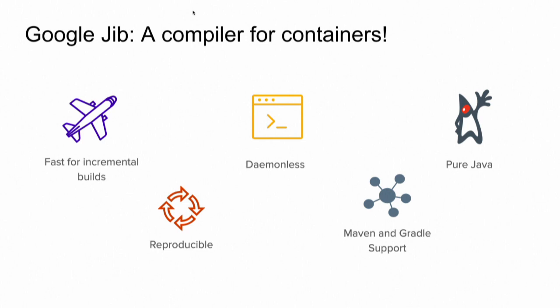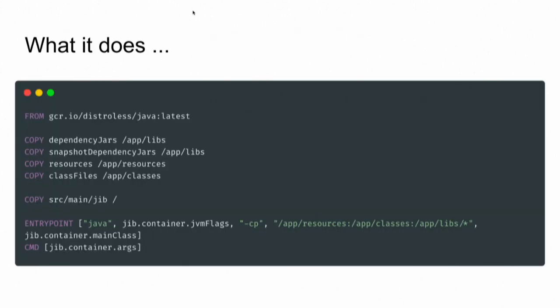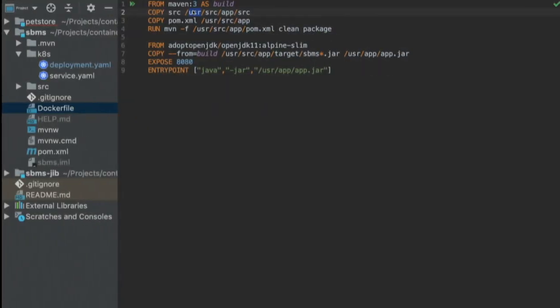JIB is a cool project from Google. It's a pure Java plugin available in both Maven and Gradle, and it enables us to build container images without the need of a Dockerfile and without the need of a Docker daemon installed on our machine. What JIB basically does is similar to what's in a Dockerfile: since JIB integrates with our build tool, it understands our application and separates it into multiple layers — putting the layers less likely to change at the top, which are the dependencies and resource files, and the layers more likely to change, which is our code, at the bottom. Let's see it in action.